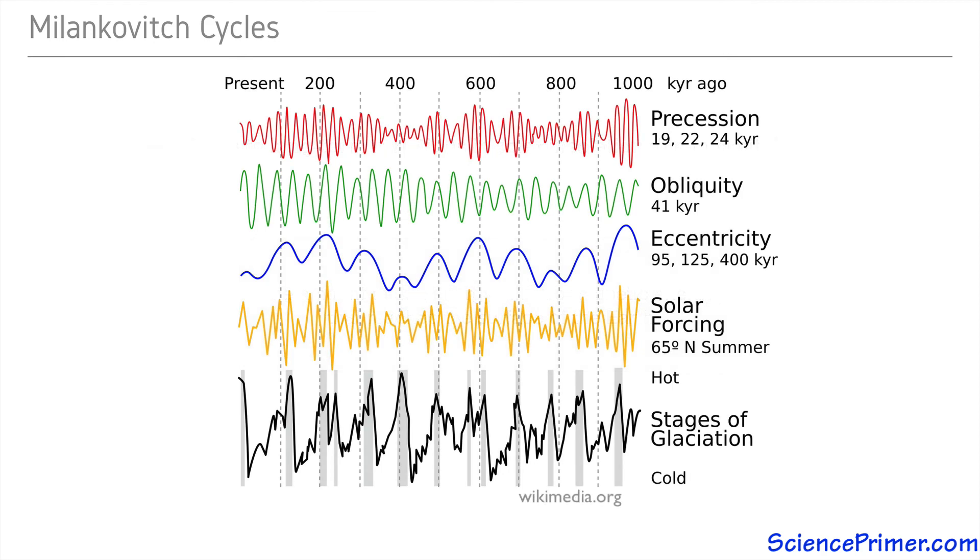Milankovitch cycles are well-studied, and while these cycles don't map perfectly onto patterns of climate change found in the geological record, work to understand these cycles has contributed to our understanding of how changes in solar insulation have influenced our climate over the past few million years.